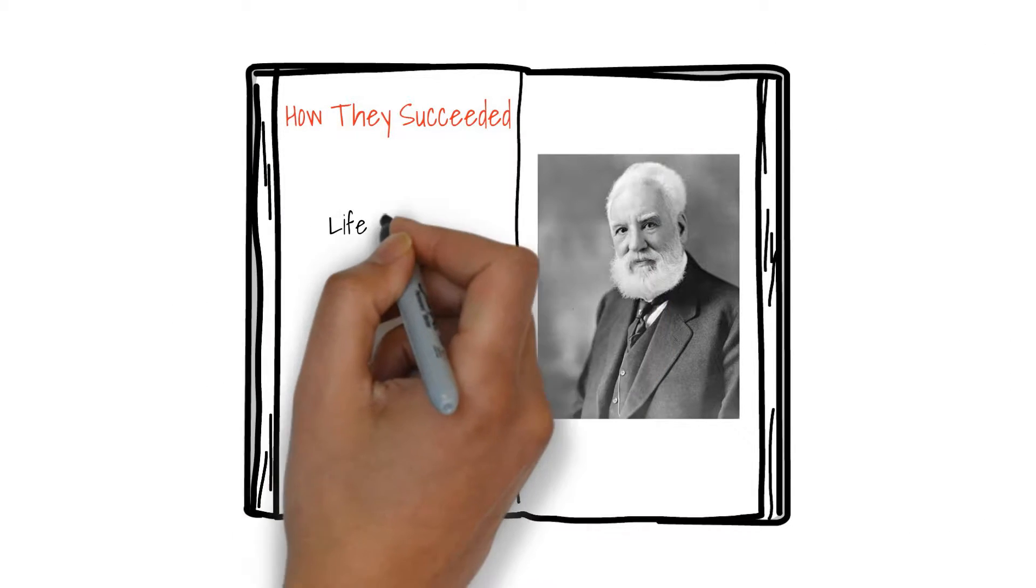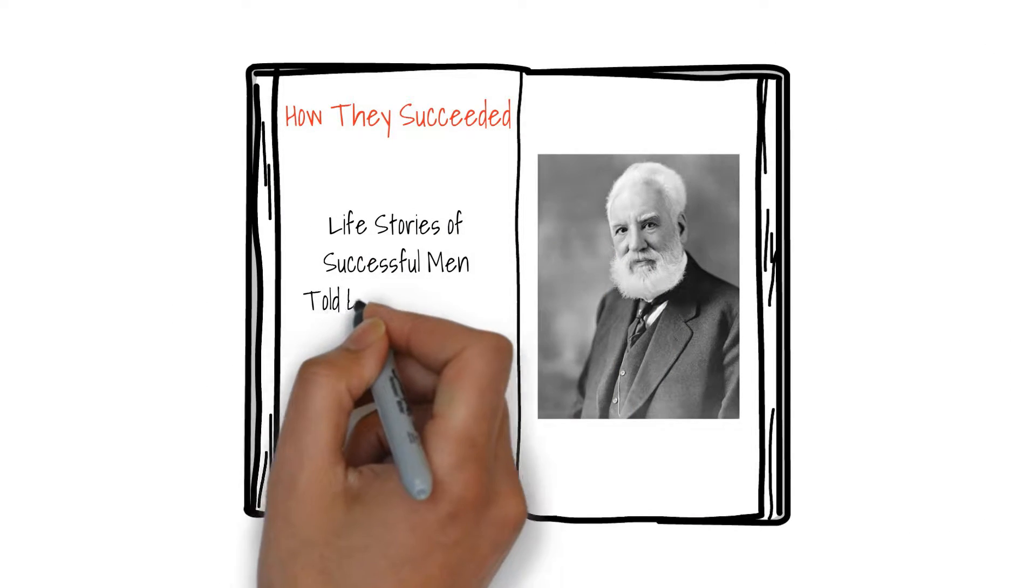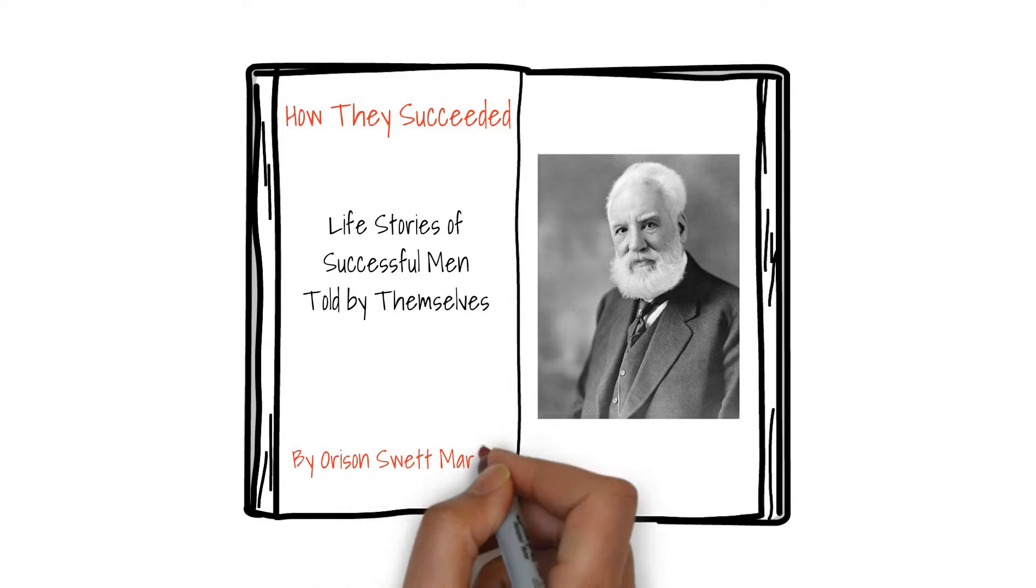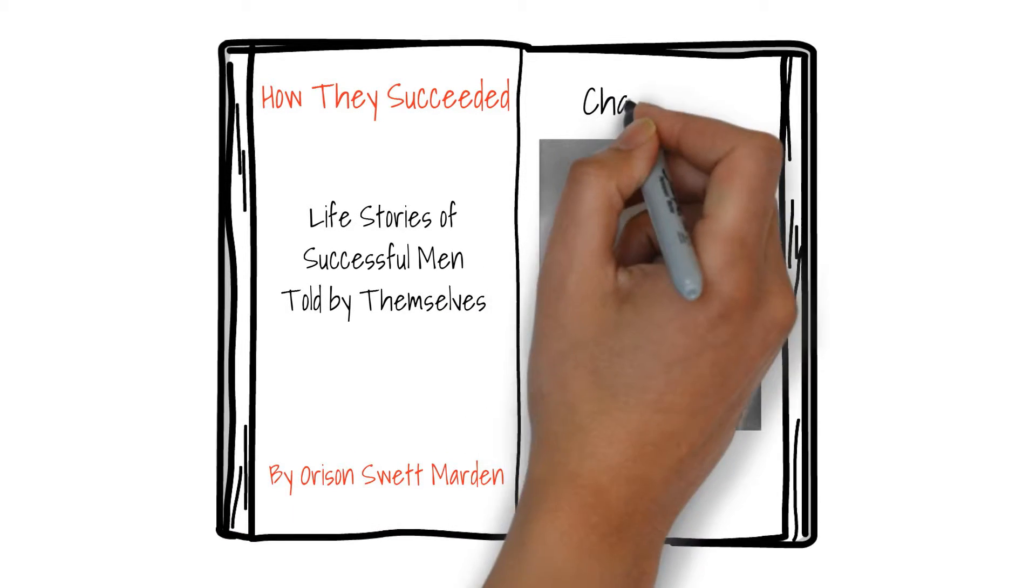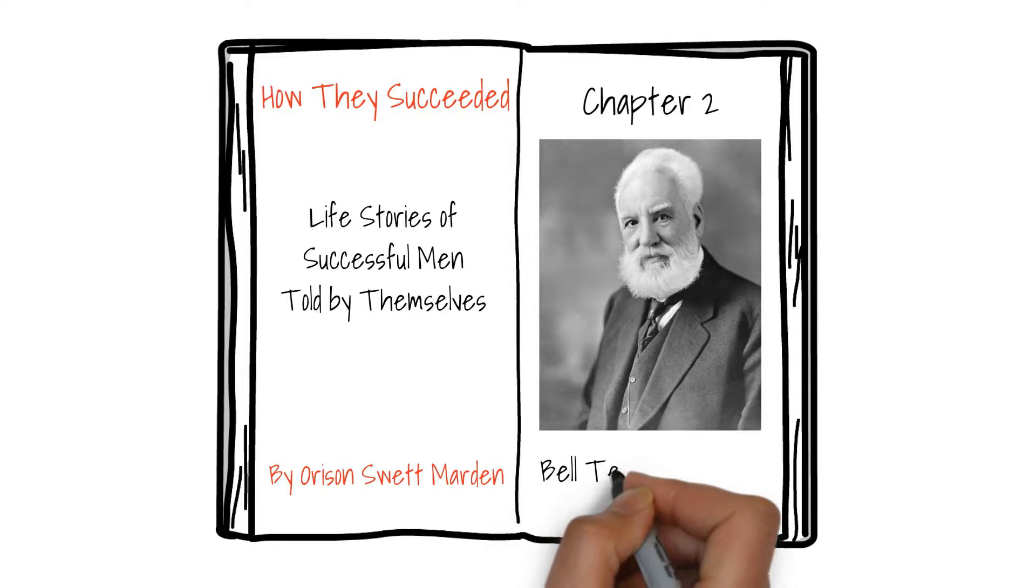How They Succeeded: Life Stories of Successful Men Told by Themselves by Orison Swett Marden. Chapter 2: Bell Telephone Talk – Hints on Success by Alexander G. Bell.